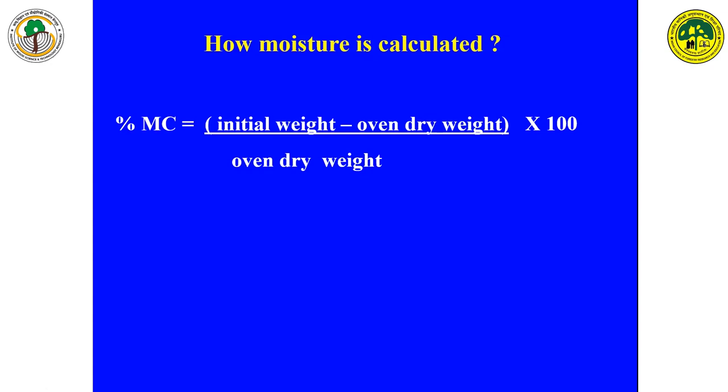We switch on the oven and leave it for 24 hours. For example, suppose today we started the experiment at 10 a.m. Then tomorrow at 10 a.m., we will open the door of the oven, take out this piece, and again measure its weight. After recording its weight, we will keep this piece inside the oven. We have not switched off the oven; it is running continuously.